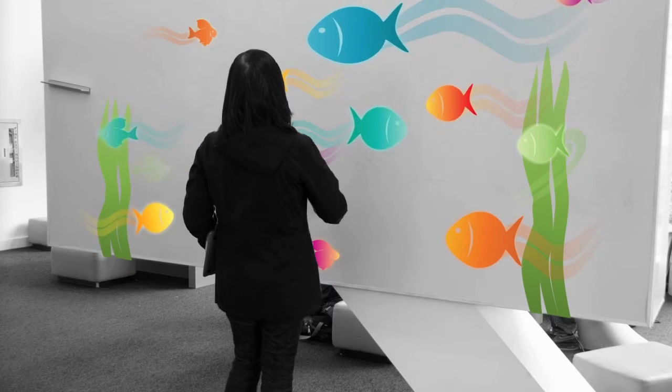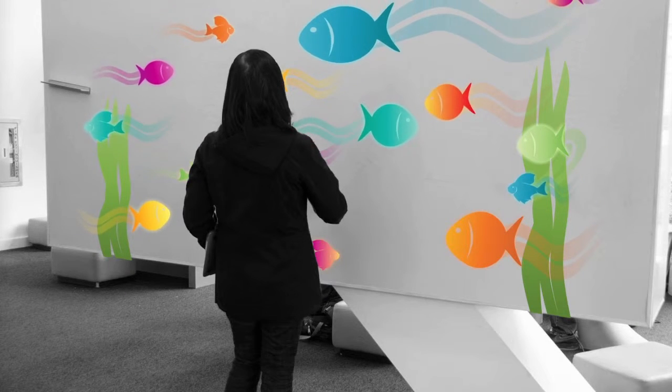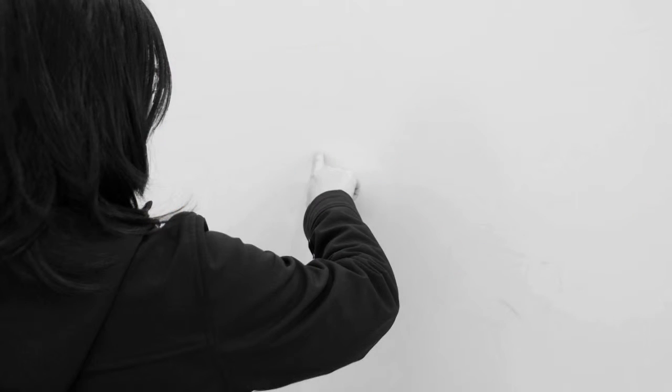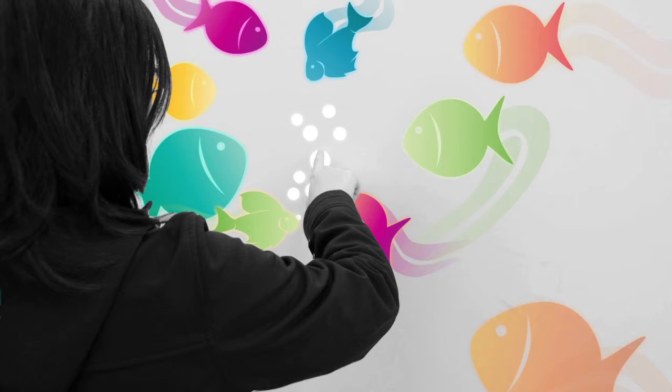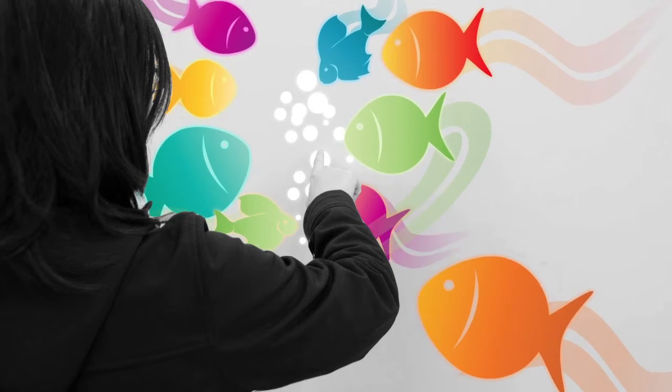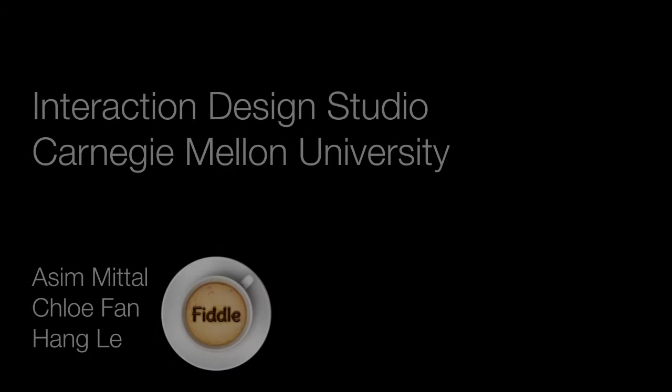Chloe notices colorful animations on a wall near the exit. She touches it and starts feeding the fish, which flock towards her. After playing with the wall for a while, Chloe exits the coffee shop.